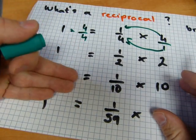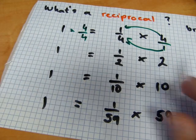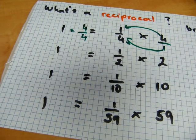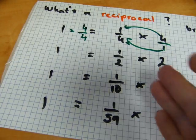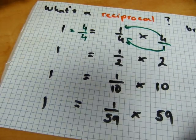So we have four over four, two over two, ten over ten, fifty-nine over fifty-nine. So these numbers are reciprocals, because their product is one.